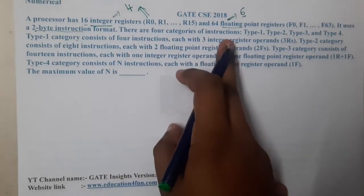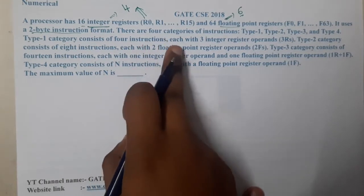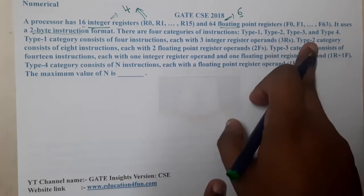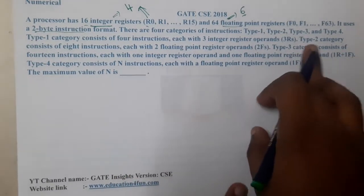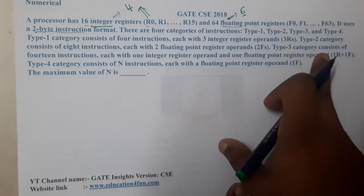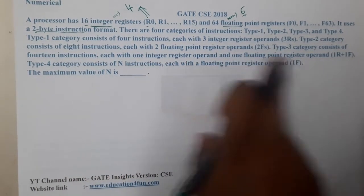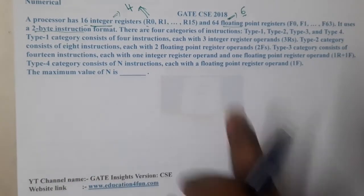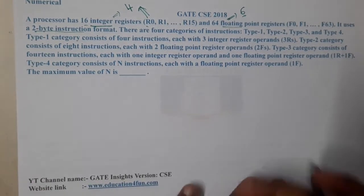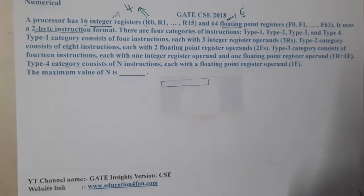There are 4 categories of instructions: Type 1, Type 2, Type 3, and Type 4. Type 1 consists of 4 instructions, each with 3 integer register operands (3R). Type 2 contains 8 instructions, each with 2 floating point operands. Type 3 contains 14 instructions, each with 1 integer and 1 float operand. Type 4 consists of n instructions, each with 1 floating point operand.